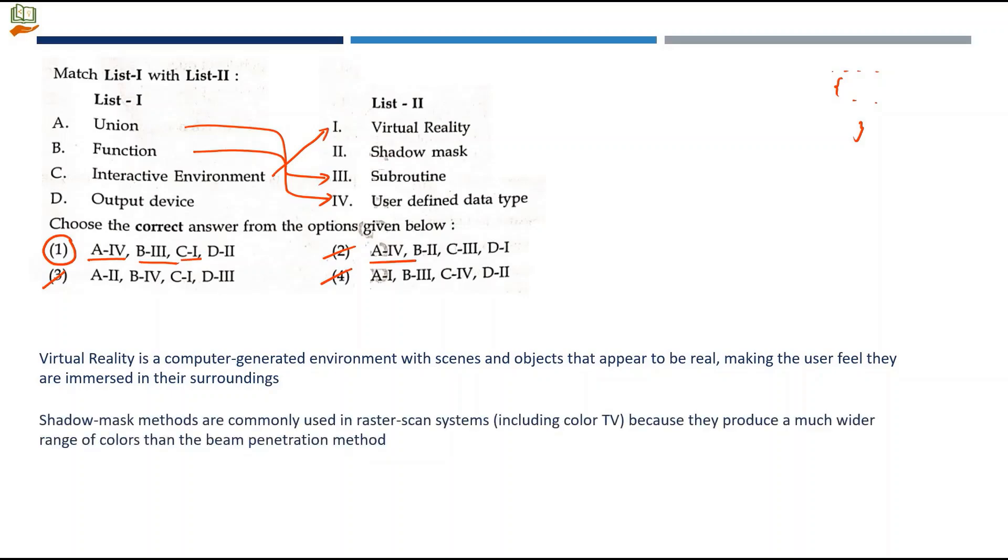What is a shadow mask? Shadow mask methods are commonly used in raster scan systems, including color TV, because they produce a much wider range of colors than beam penetration method. Under which topic can you find these details? Video display devices. When you start computer graphics, it starts with video display devices. In that, when you go for raster scan systems, you find shadow mask method. When raster scan system comes, when you see color TV, when you take the topic video display devices, what is it about? It is about the output given. We can map output device to shadow mask, D to 2.